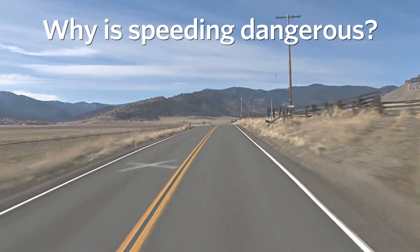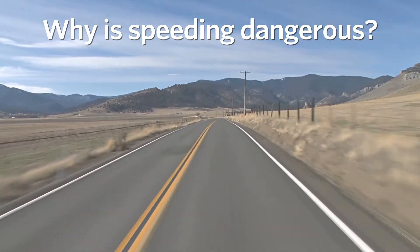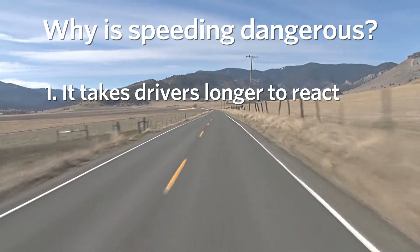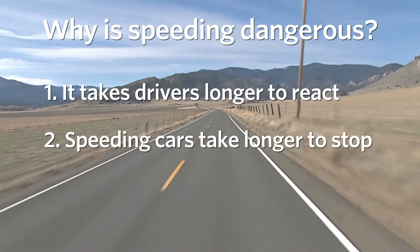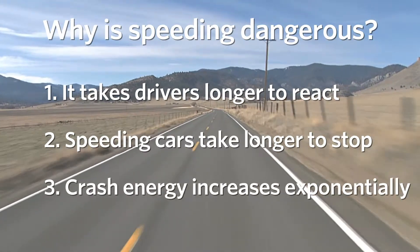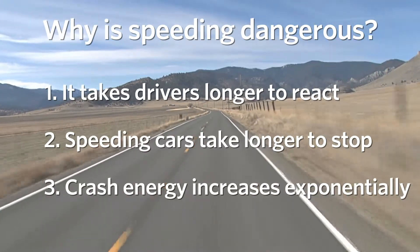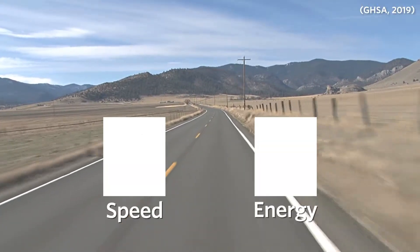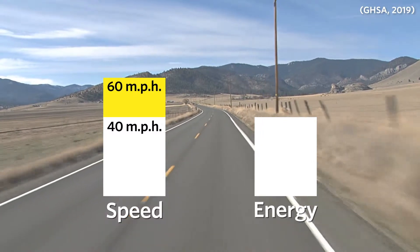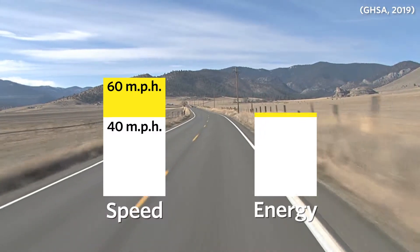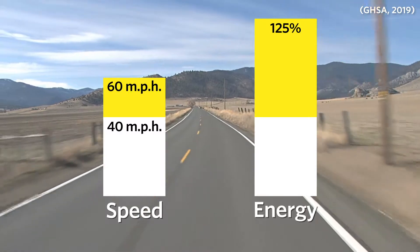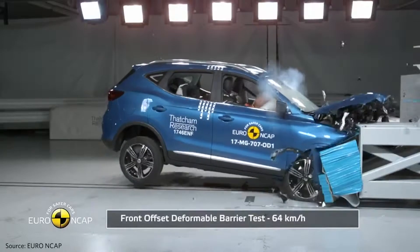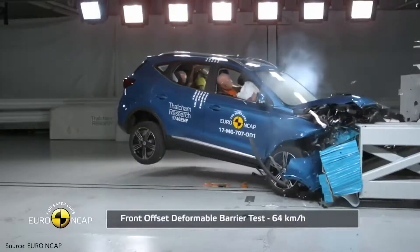Why is speeding dangerous? Speeding increases the risk of a crash in a few ways. First, it takes longer for speeding drivers to detect an emergency, increasing their stopping distance. Second, speeding cars take longer to come to a stop. Finally, as speed increases linearly, crash energy increases exponentially. For example, when the impact speed increases from 40 to 60 miles per hour — a 50 percent increase — the energy increases by 125 percent. This increase in force makes collisions more severe. At very high speeds, car safety equipment like airbags and seatbelts are insufficient to protect passengers.